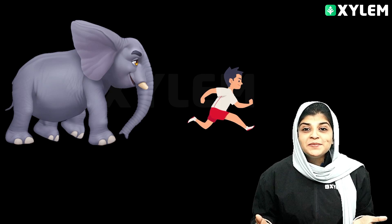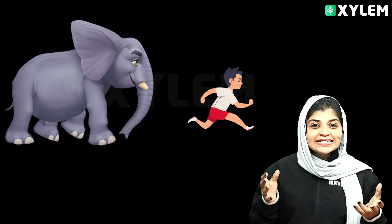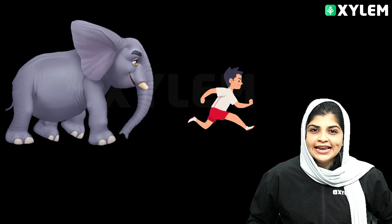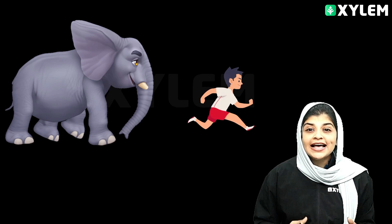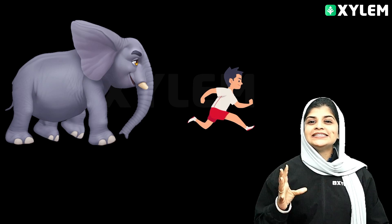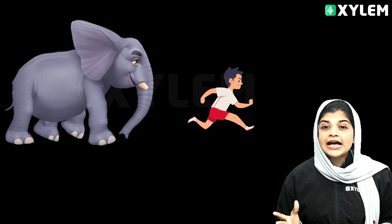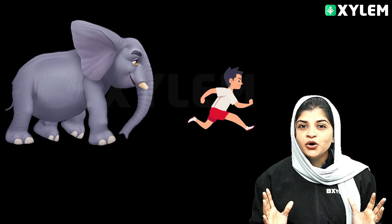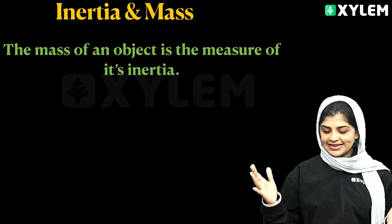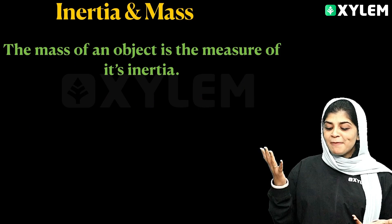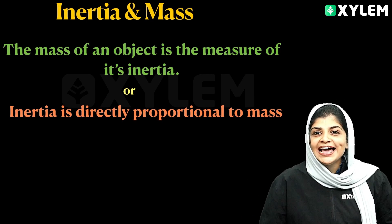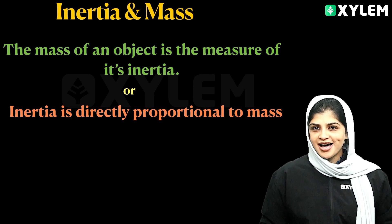The difference is that the elephant has more inertia as compared to that boy. So here we can understand one thing: mass is a measure of inertia. Mass is directly proportional to inertia.